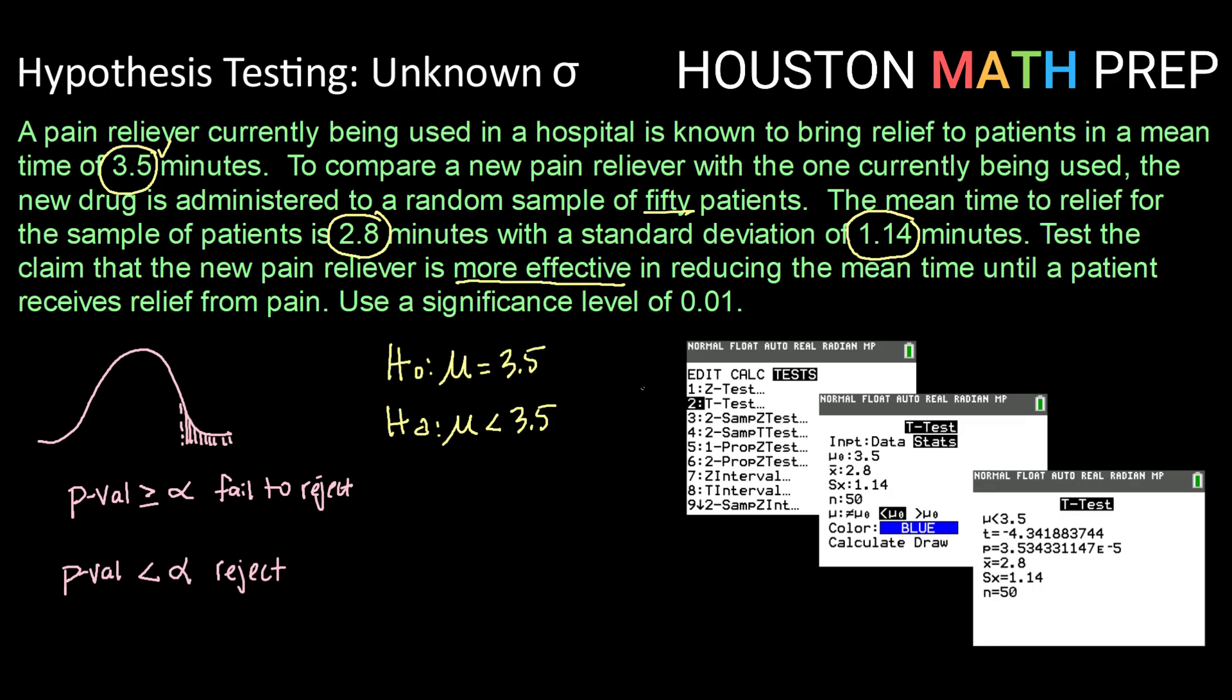So using the p-value method, we don't really need to do any calculation by hand. All we need to do is go to our stat menu in our calculator. Since we have a sample standard deviation, we're going to be using that t-test or our student t-distribution. And we need to make sure that we toggle over to stats. And then we're going to enter 1, 2, 3, 4 pieces of information.